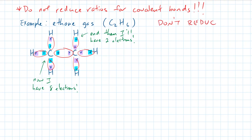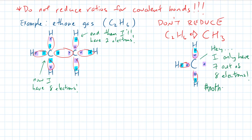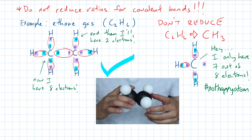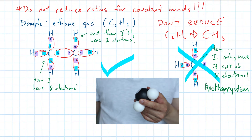Let's say you accidentally reduce the ratio of C2H6 down to CH3. As you can see, although the three orbiting hydrogens are chemically stable, the carbon in the middle is unstable, as it only has seven out of the eight electrons needed and has not formed a stable octet. This is the reason why ethane has to be C2H6 and not accidentally reduced down to CH3.